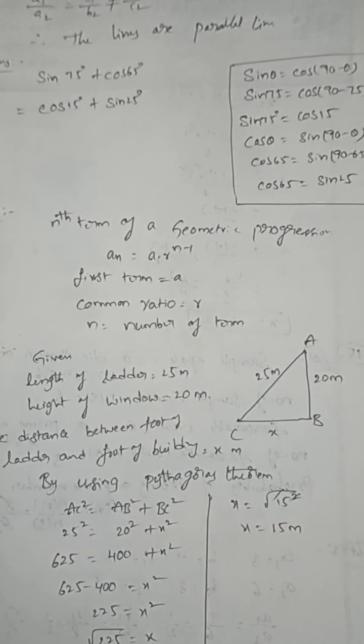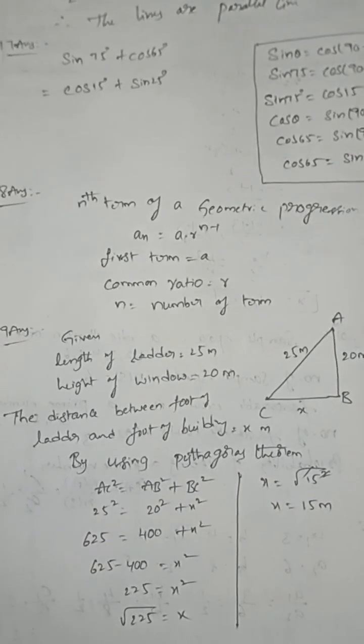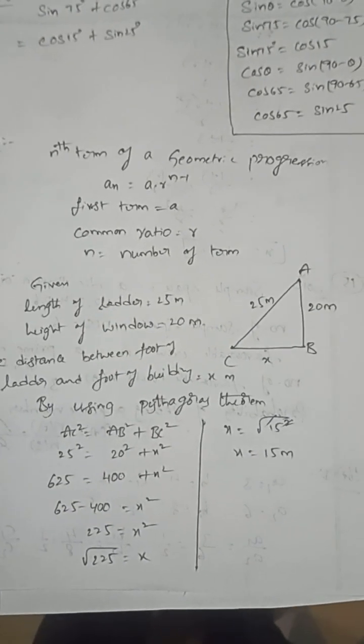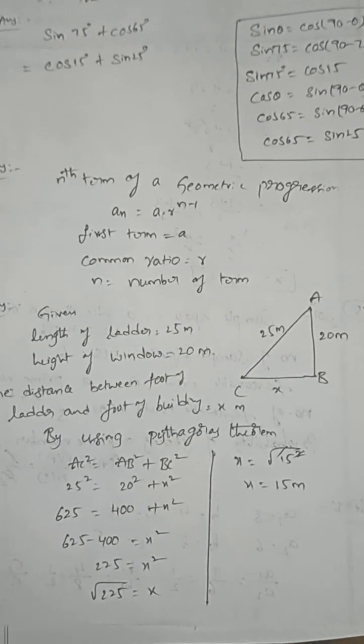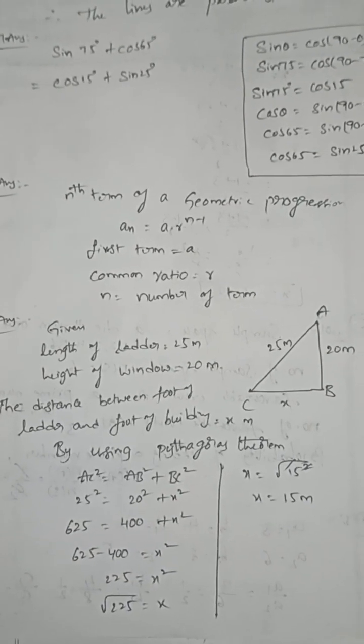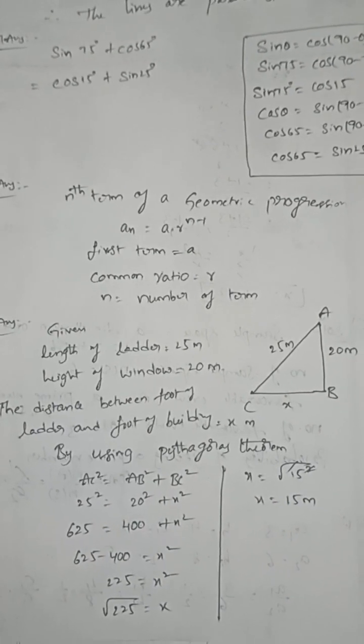nth term of geometric progression: aₙ = a·rⁿ⁻¹, where a is the first term, r is the common ratio, n is number of terms. Next, the length of the ladder is 25, height of the window is 20 meters. The distance between foot of the building to foot of the ladder is x. Using Pythagoras theorem: AC² = AB² + BC². So the distance is 15 meters.